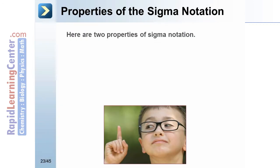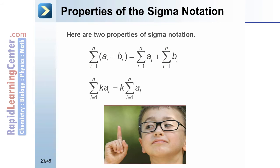Here are two properties of sigma notation. The summation of (a sub i plus b sub i) equals the summation of a sub i plus the summation of b sub i. The summation of k times a sub i, where k is a constant, equals k times the summation of a sub i.